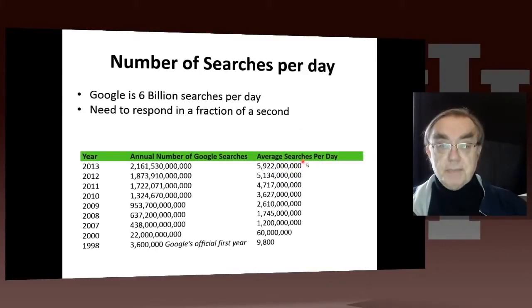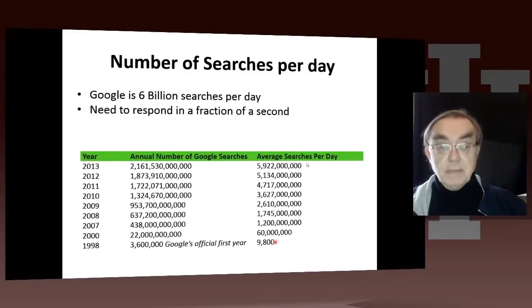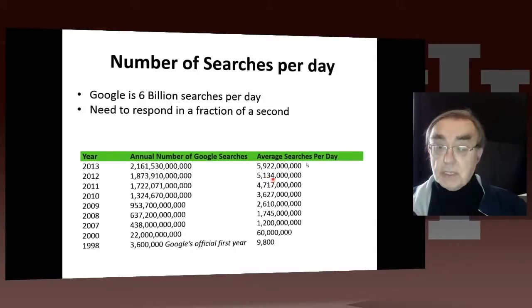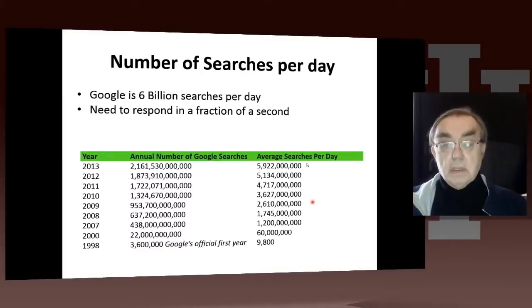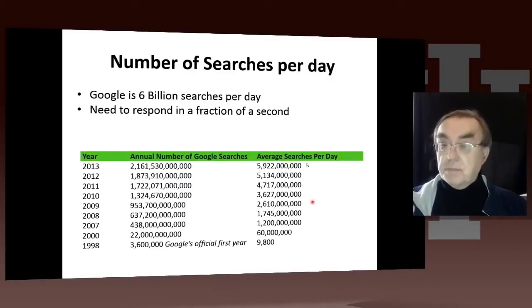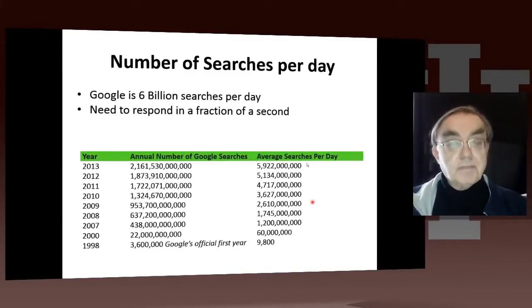This is 6 billion searches per day. Here's the annual number — it's too large a number to think about. Notice when they started, they got 10,000 searches per day; that was 1998, and it's grown pretty systematically. From 2011 to 2012 was actually only a 10% increase, while more recently it's closer to 20%. But 6 billion per day is not trivial. And remember, we have to respond to all of these in a fraction of a second — 0.15 seconds is my magic number. Because your brain doesn't do much in 0.15 seconds, but it does a lot in one second, so it gets very frustrated if you wait a second.